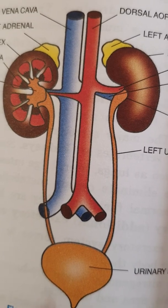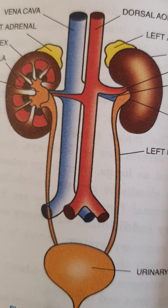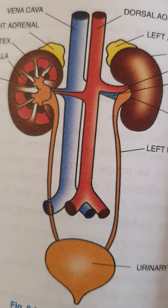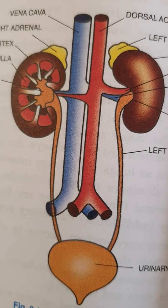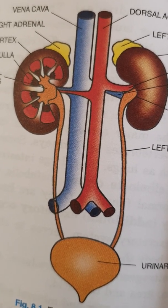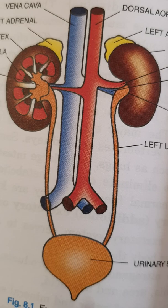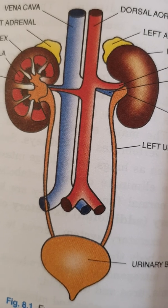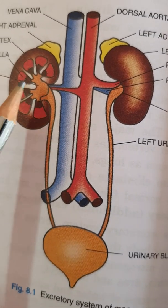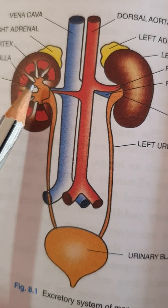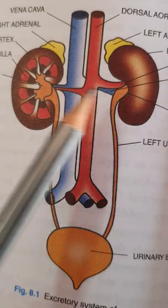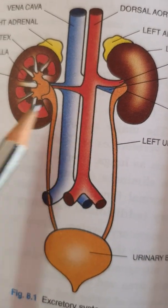Good morning children. Today I am going to explain the urinary system in humans. This is the diagram of the urinary system, and as you can see in the diagram, there is a pair of kidneys.